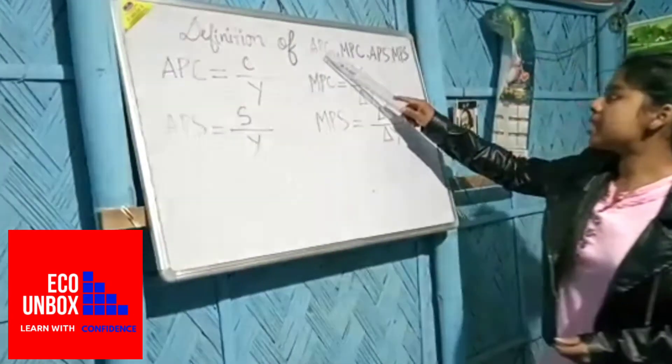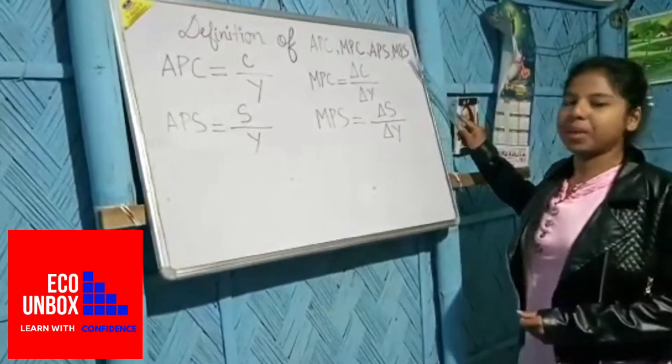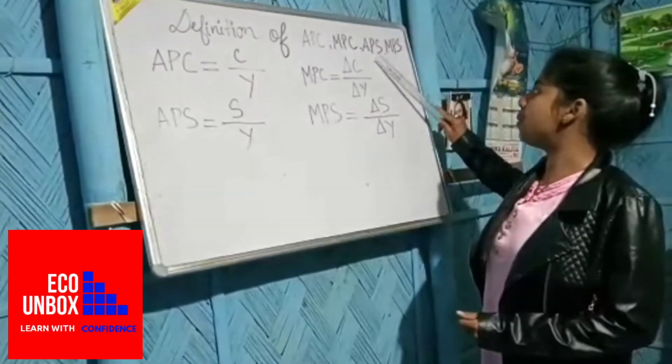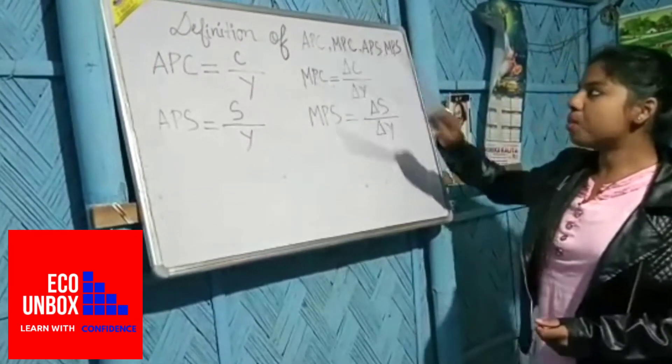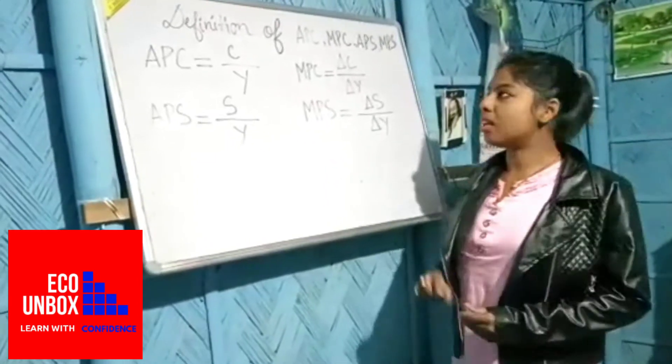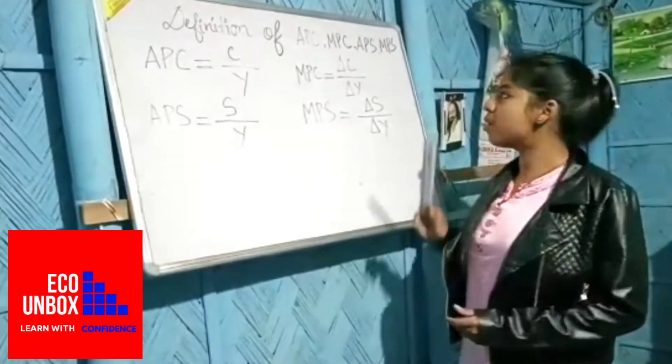the concept of MPC, APC, APS, and MPS. So we should know the full form of APC, MPC, APS, and MPS. APC means average propensity to consume, MPC means marginal propensity to consume, APS means average propensity to save, and MPS means marginal propensity to save.